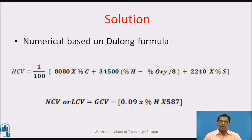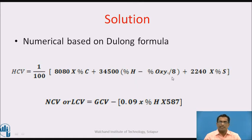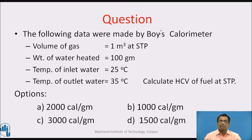Numericals based on Dulong formula, that is the theoretical formula. We can calculate HCV and NCV theoretically using the Dulong formula. The HCV formula is: HCV = (1/100) × [8080 × %C + 34500 × (%H − %O/8) + 2240 × %S]. NCV or LCV can be calculated using: LCV = GCV − 0.09 × %H × 587.